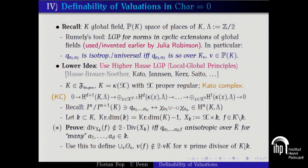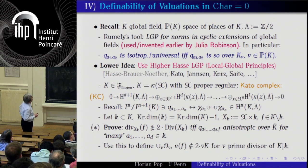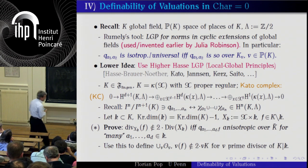The key idea is to use higher Hasse local-global principles, initiated by Kazuya Kato. Take any finitely generated field and look at proper regular models — projective regular schemes over ℤ with function field K. Let me remind you the Hasse-Brauer-Noether sequence: 0 → H²(G_K, λ) → ⊕_{v ∈ places of K} H¹(residue field of K_v, λ), which is injective but not surjective; to make it surjective you add λ → 0. For global fields this amounts to the space of non-trivial quaternion algebras — the Brauer group — with the Tate symbol.